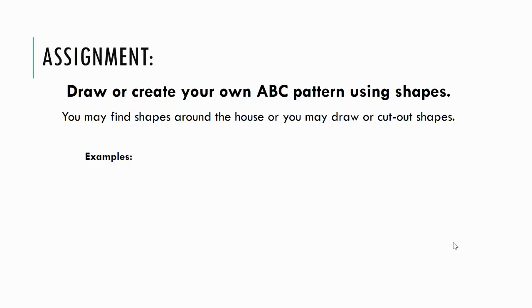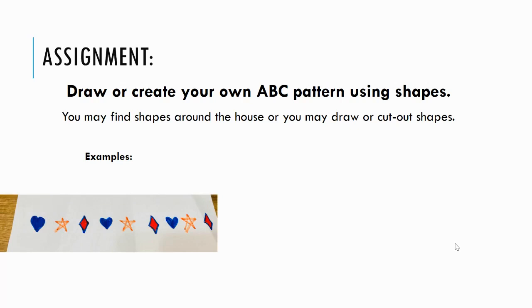So we're going to find three different kinds of shapes. This is an example of an ABC pattern that I made. I used a heart, star, diamond. And I repeated that again: heart, star, diamond, heart, star, diamond.